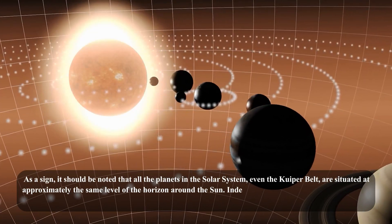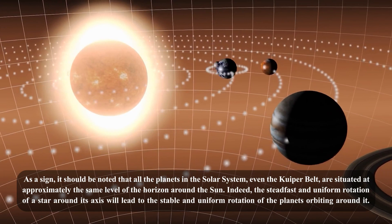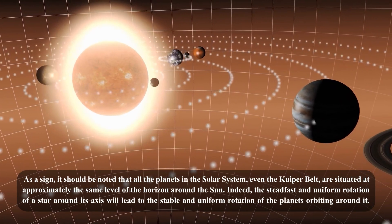As a sign, it should be noted that all the planets in the Solar System, even the Kuiper Belt, are situated at approximately the same level of the horizon around the Sun.